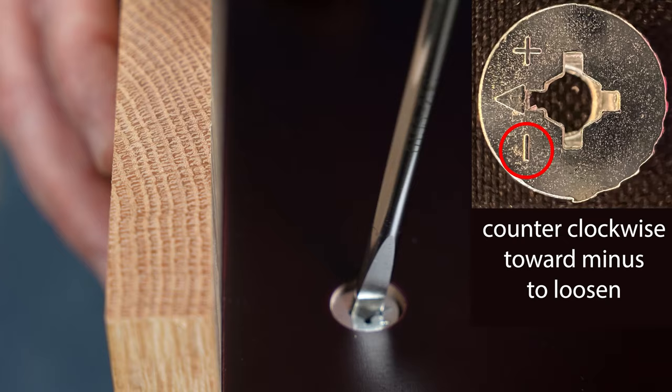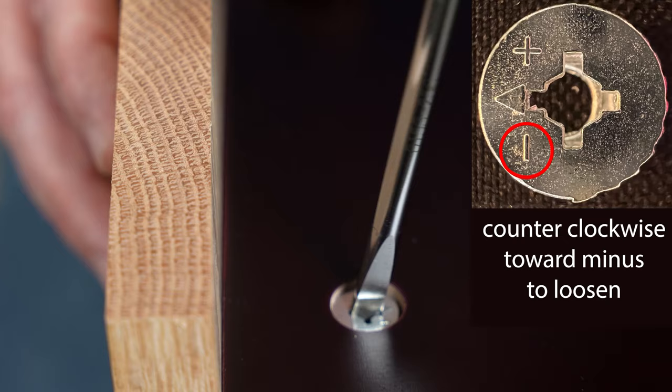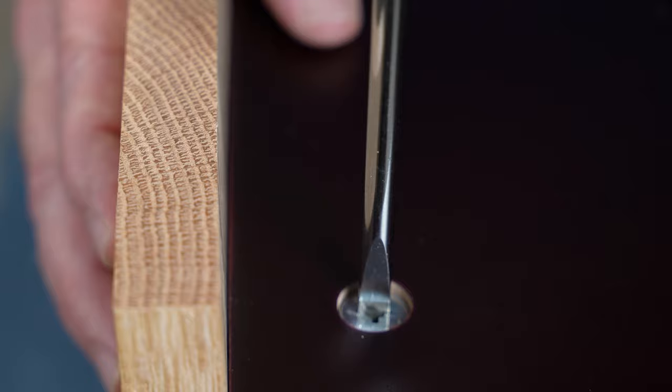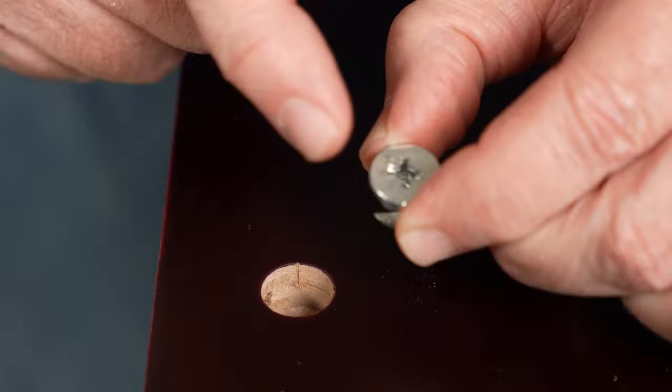Now, if I need to take this off, I'm just going to take my screwdriver, turn this again, you can feel it loose, to where the arrow lines up with the bolt, and I can just remove this. I don't see any reason to remove these again.